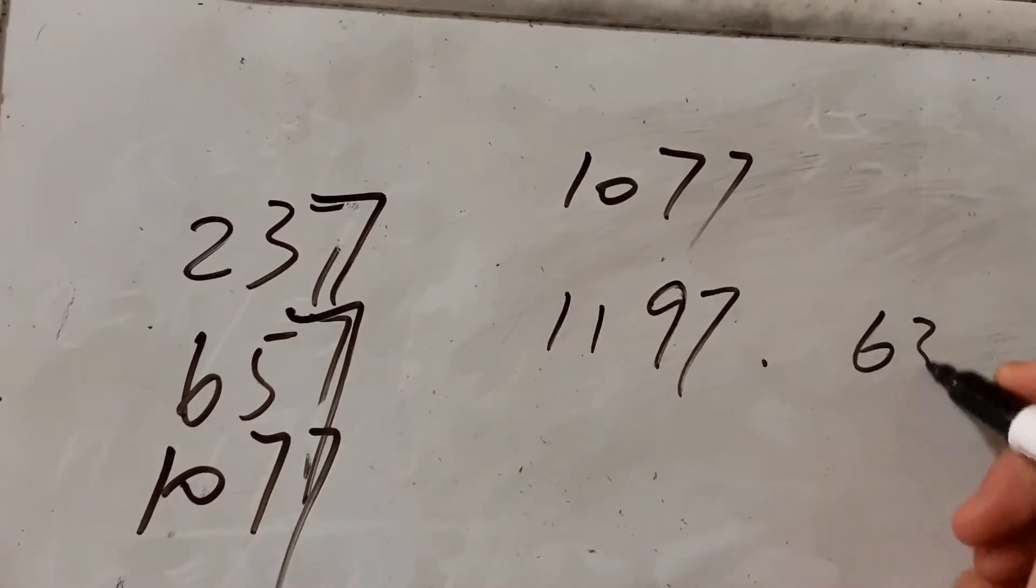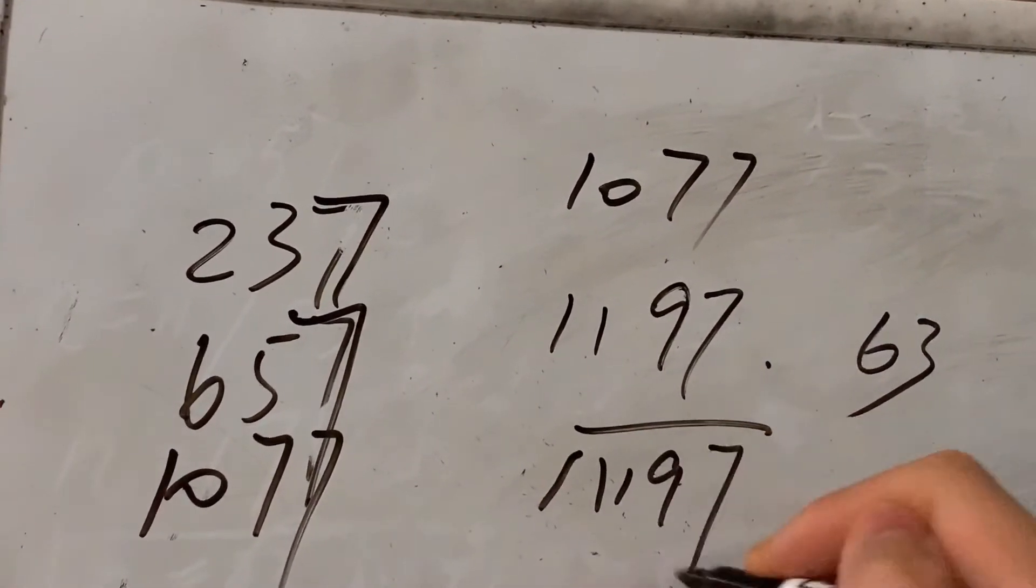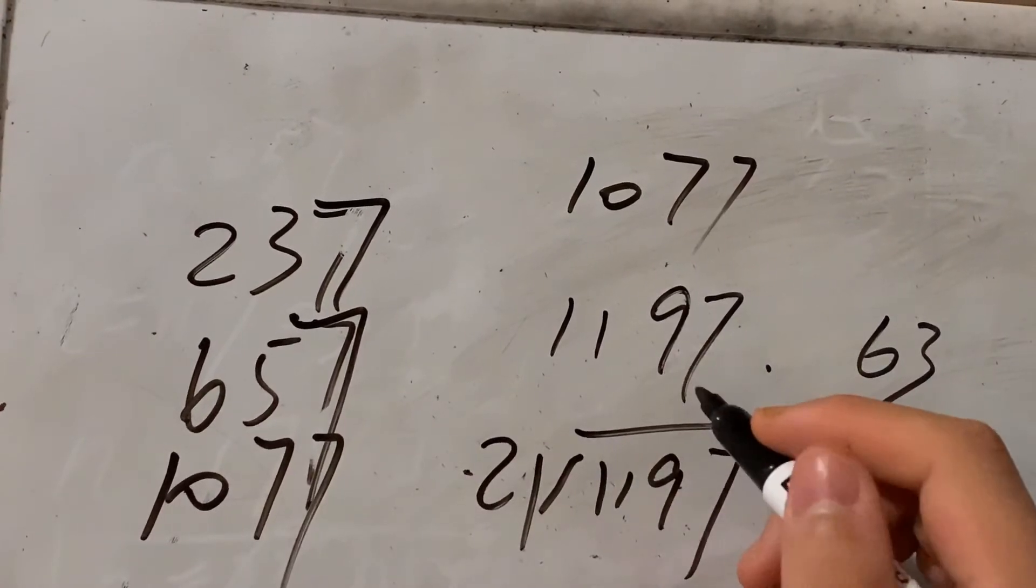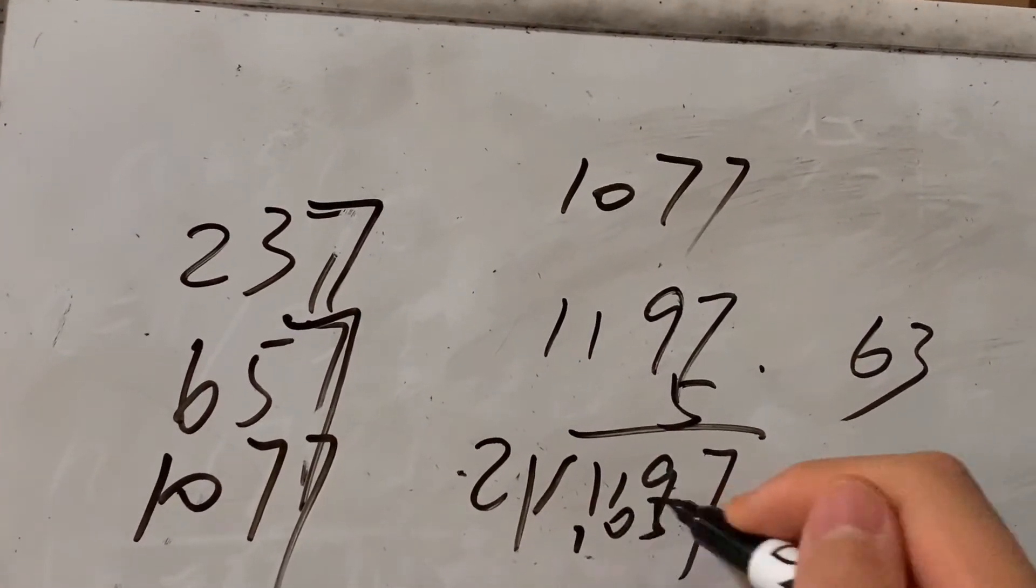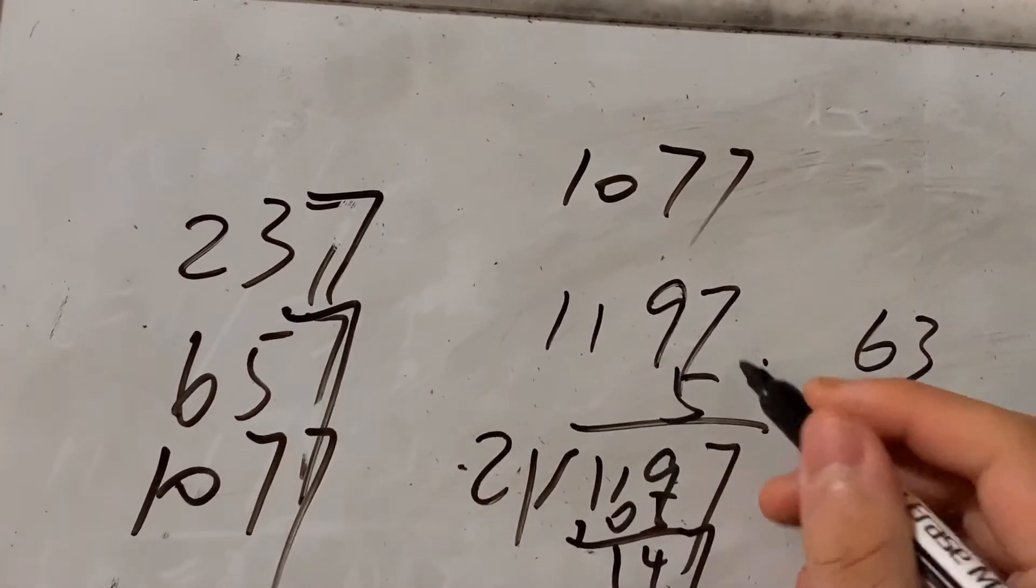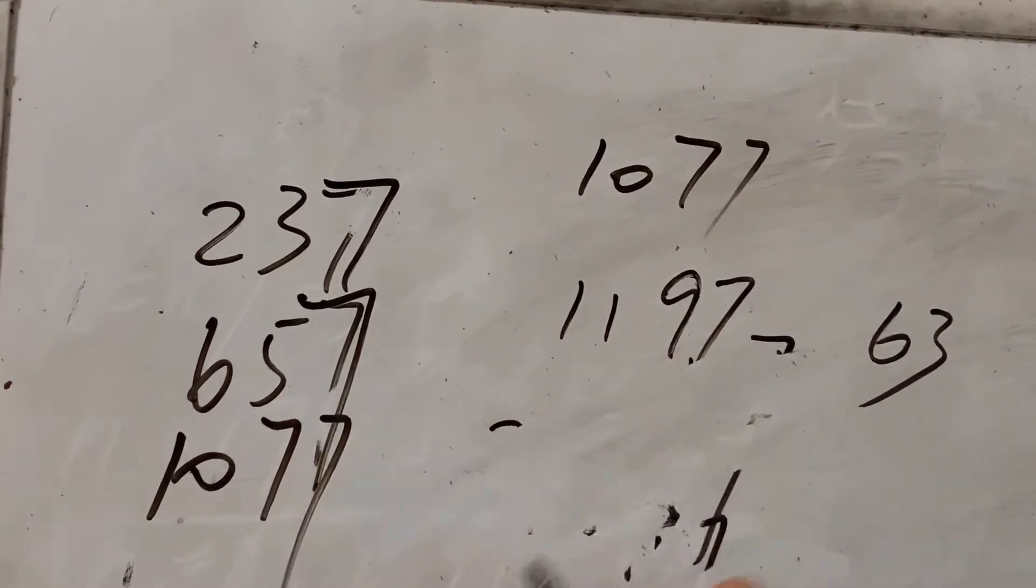So we should try starting from 1077 as the first number. So we add up 120 is 1197 with 63. So 1197 divided by 21 is 57. Okay, it works for the first requirement.